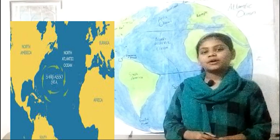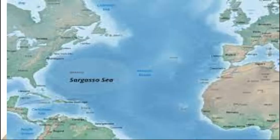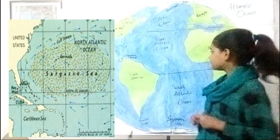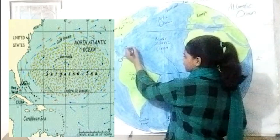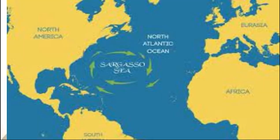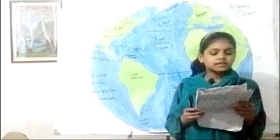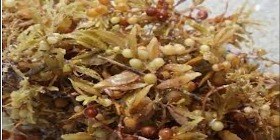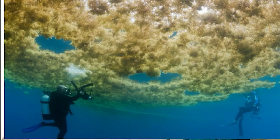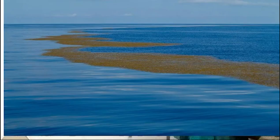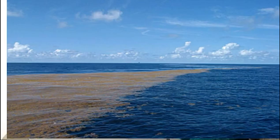The Sargasso Sea is about 1,100 km wide and 3,200 km long, located entirely within the Atlantic Ocean. It is the only sea without a land boundary. Sargassum is a brown algae with air bladders which keep it afloat. It looks like the attached marine plant found in fossil water. The Sargasso Sea is named for its unique ecosystem and has been called a potent floating rainforest.